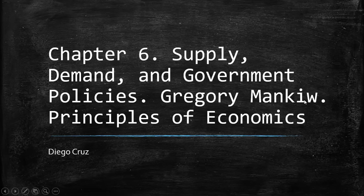Hi everyone. In this video we're going to talk about Chapter 6, which is about supply, demand, and government policies, from Gregory Mankiw's book Principles of Economics.